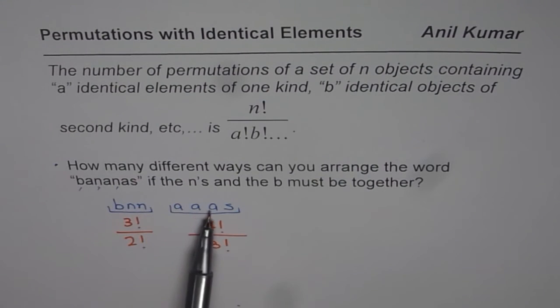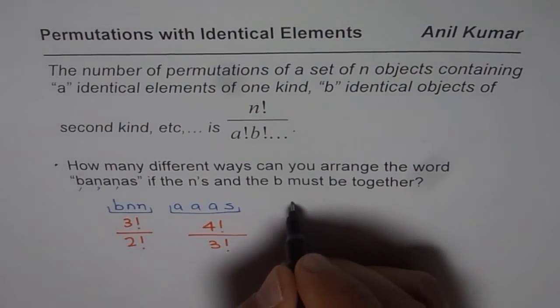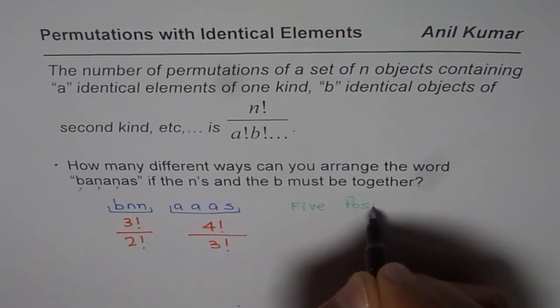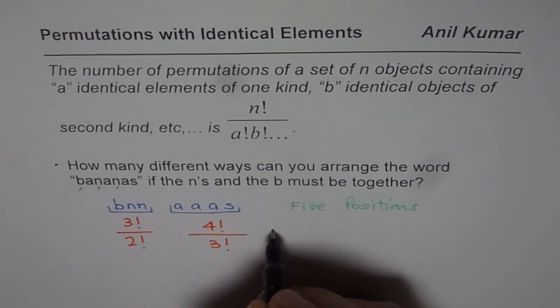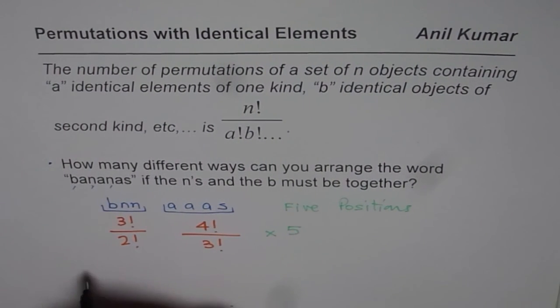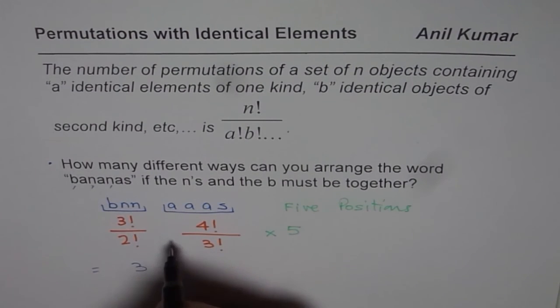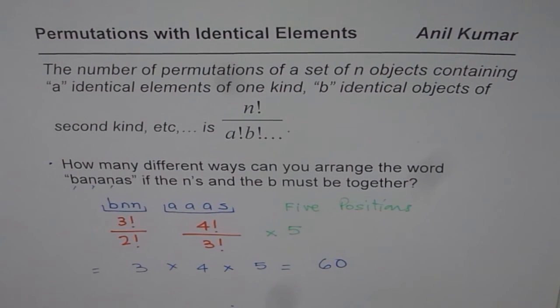Plus, there are five positions to fill in. We have five positions. This has to come together, and that's why we have five positions. So that gets multiplied by 5. So that gives you the answer as 3 factorial divided by 2 factorial is 3, times 4 factorial divided by 3 is 4, times 5. So 20 times 3 is 60. We get 60 as our answer.